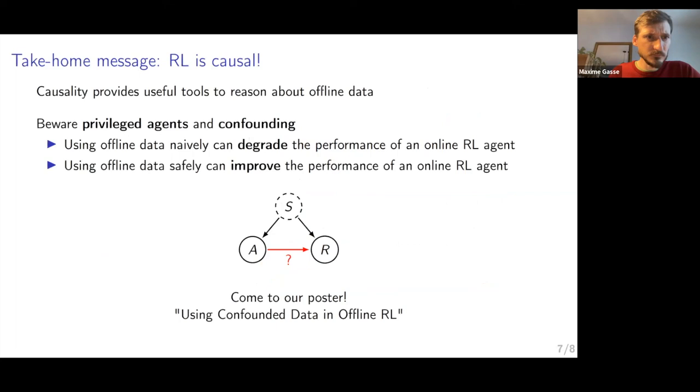So take-home message. Reinforcement learning is a causal problem. What you want to learn is a causal transition model. In the case of model-based RL, you want data that is causal. The field of causality has useful tools that can help you reason about confounding effects of offline data, especially from privileged agents. You can directly apply tools from causality. And you should be aware of privileged agents when you collect offline data and confounding.